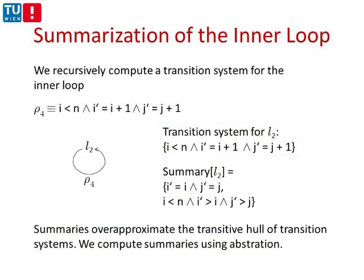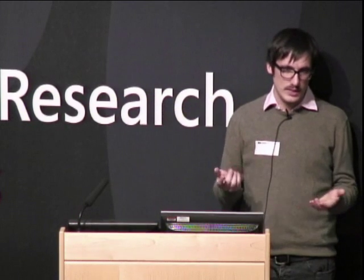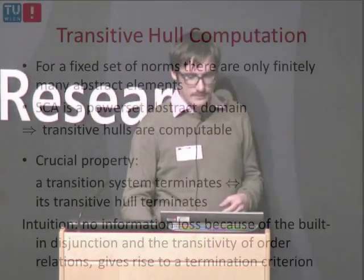For summarizing the inner loop, we derive its transition system recursively, and then to summarize it, we compute the transitive hull — representing arbitrarily many iterations through the inner loop. The nice thing is that we can use the same abstraction for summarizing inner loops: we take the transition system, size-change-abstract it, and compute the transitive hull in the abstract. This can be done because the abstraction is finite, so we can compute the transitive hull, and then just plug it in.